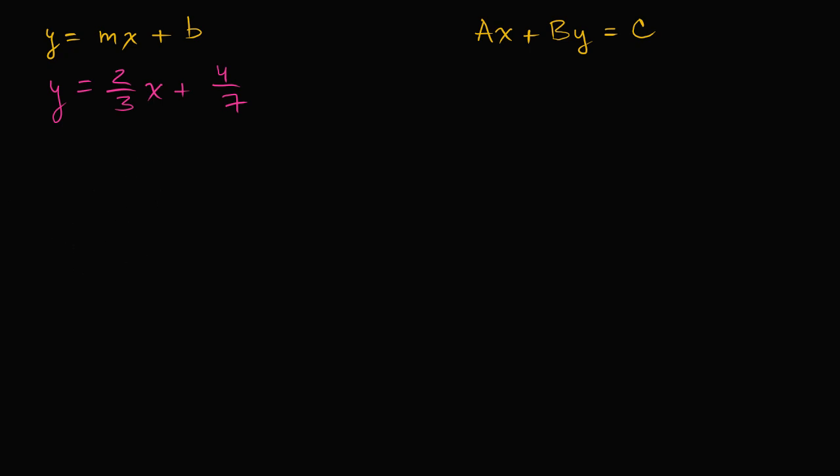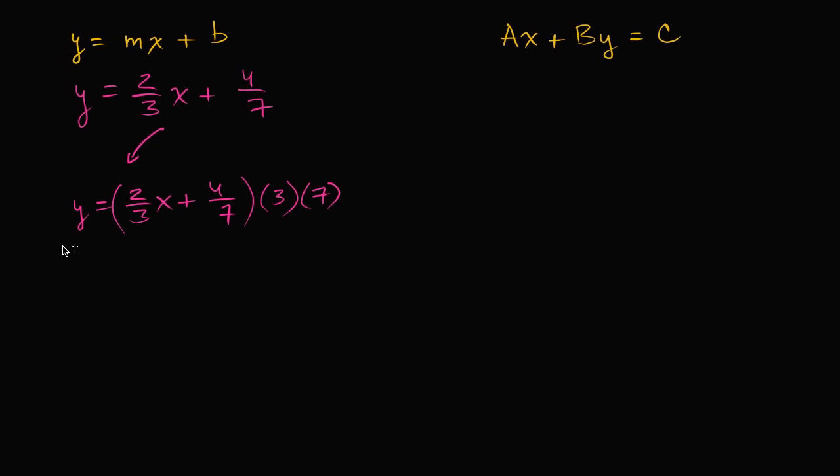So if you multiply by 3 and you multiply by 7, actually, let me just rewrite it over here. So we start with y equals 2/3x plus 4/7. So if I multiply this side by 3 and I multiply by 7, I have to do that to this side as well. So this is going to be multiplied by 3 and multiplied by 7.